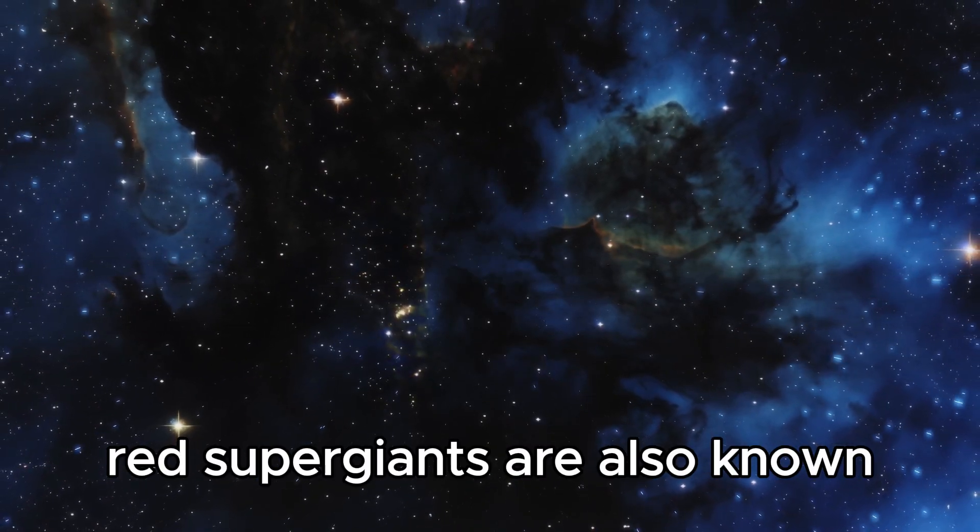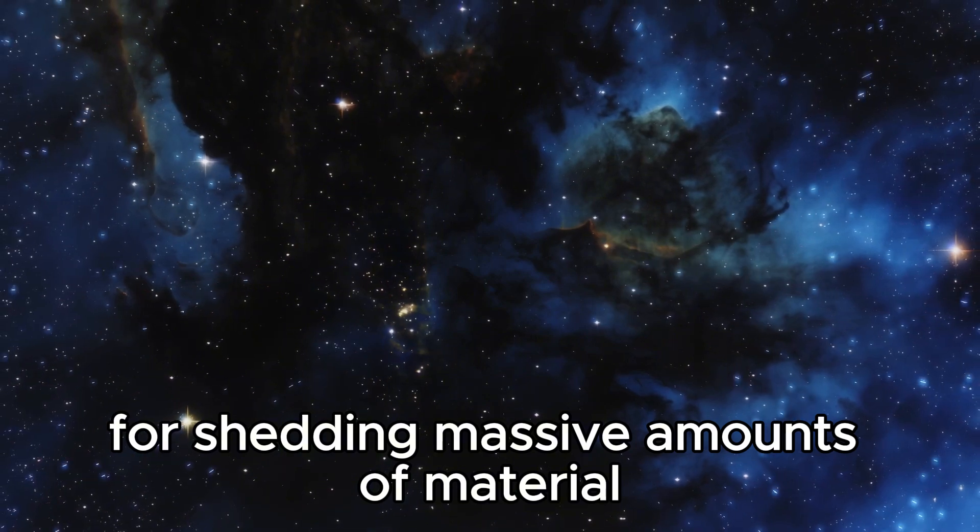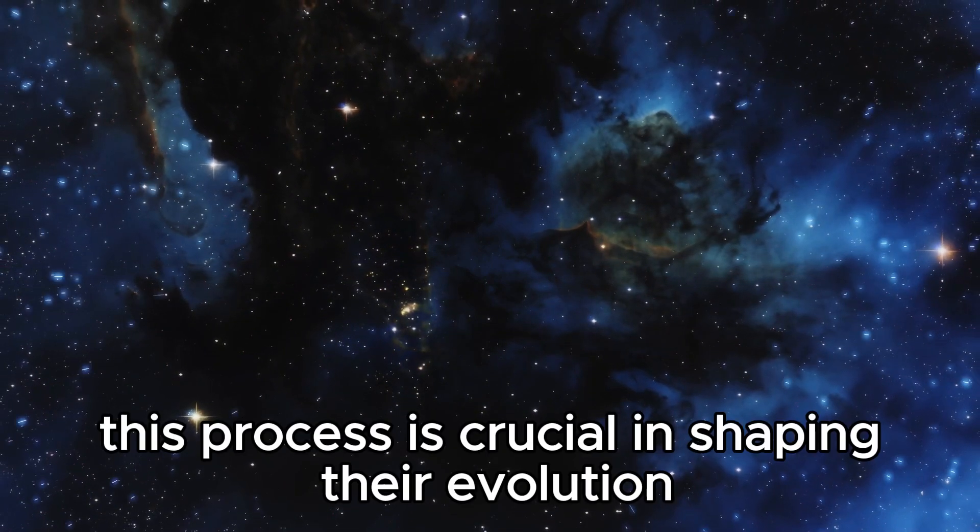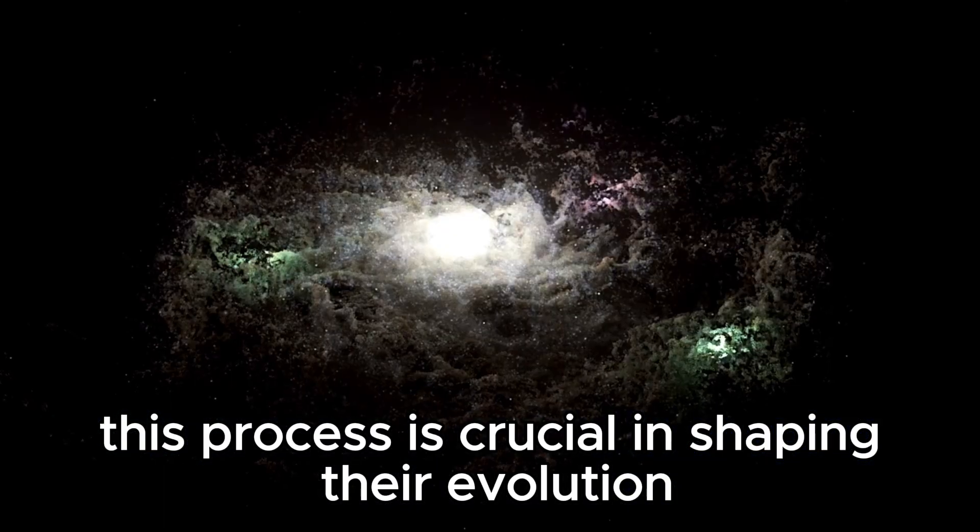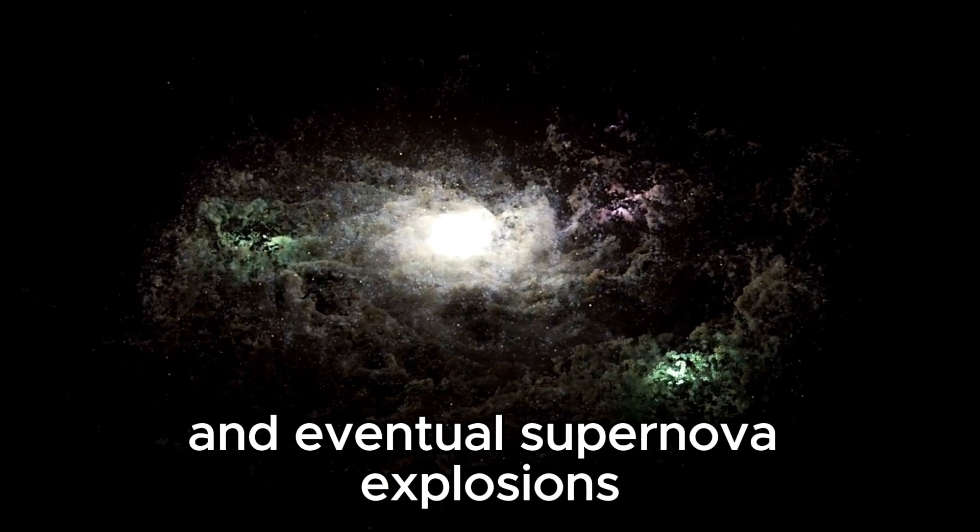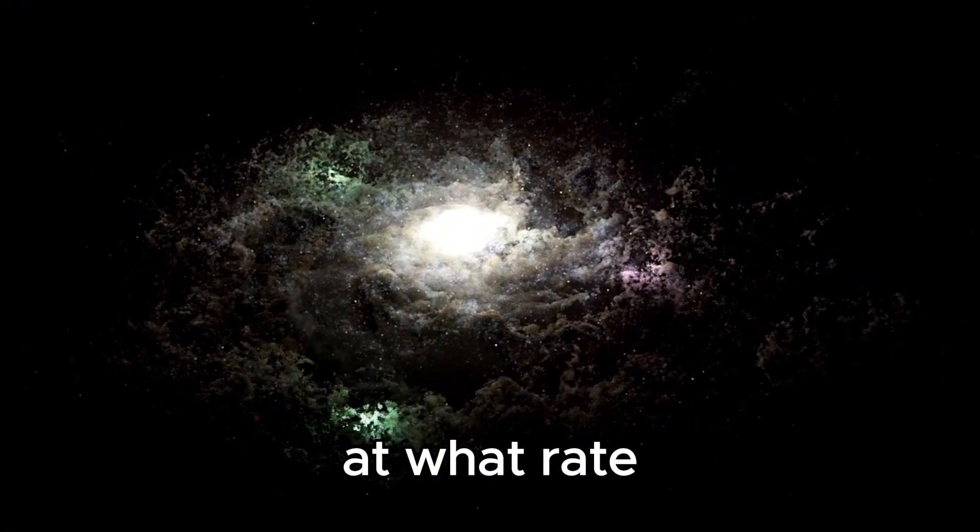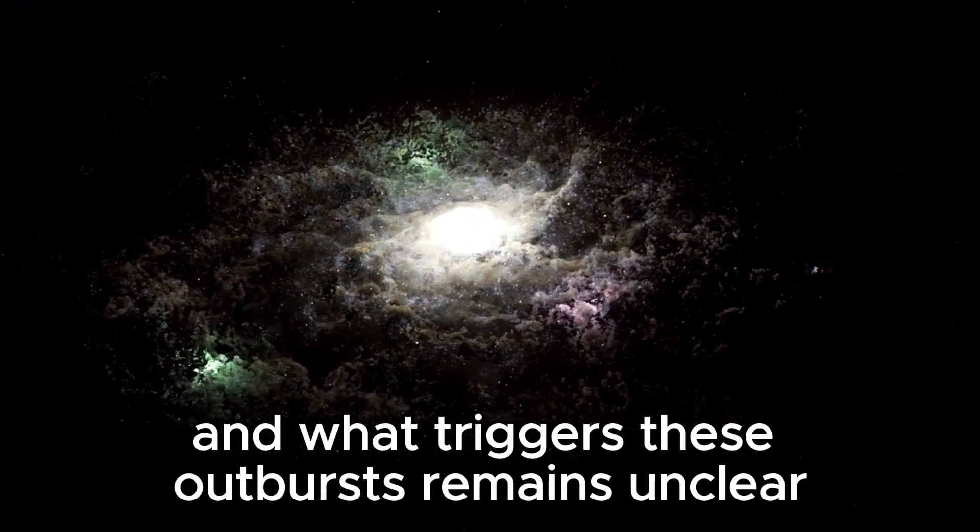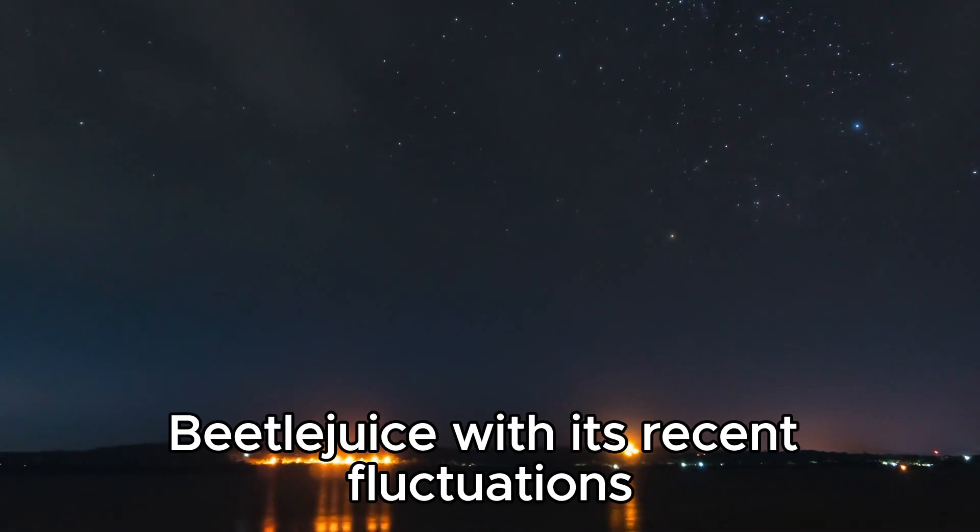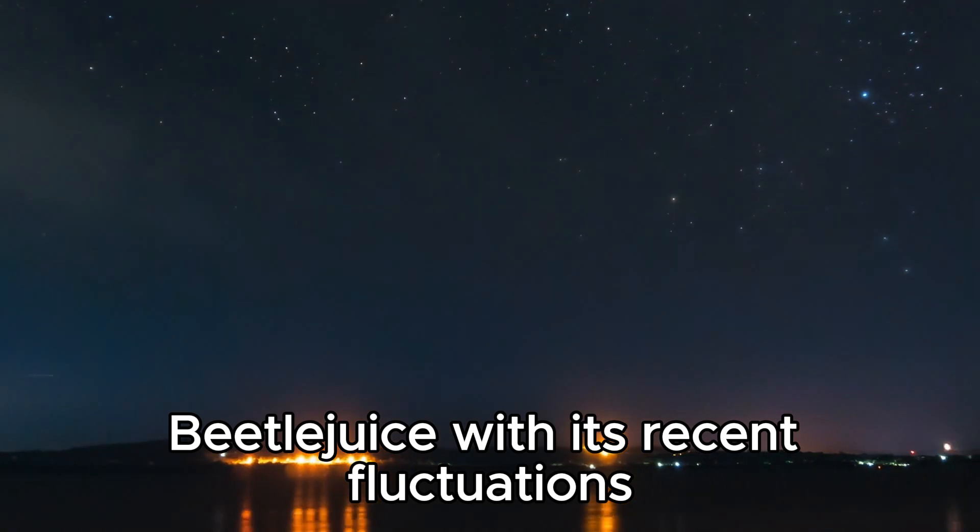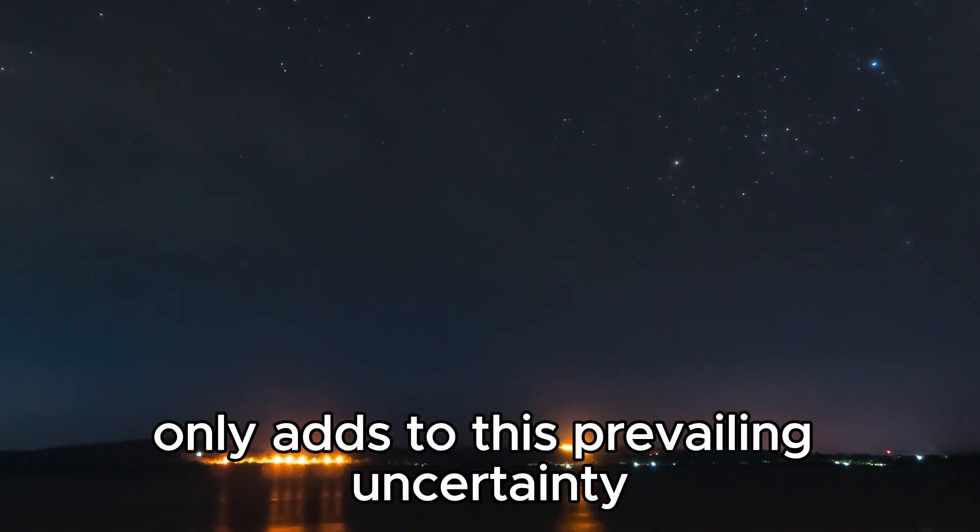Red supergiants are also known for shedding massive amounts of material in their later stages. This process is crucial in shaping their evolution and eventual supernova explosions. Yet how they lose this mass, at what rate, and what triggers these outbursts remains unclear. Betelgeuse, with its recent fluctuations, only adds to this prevailing uncertainty.